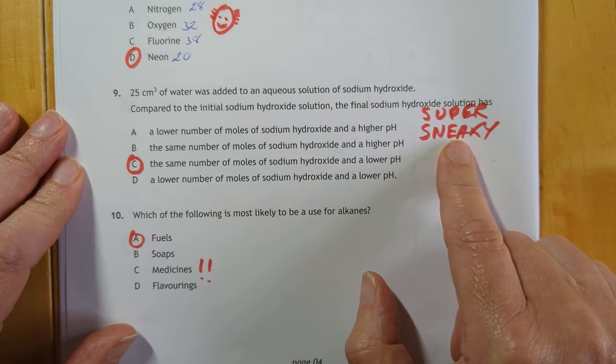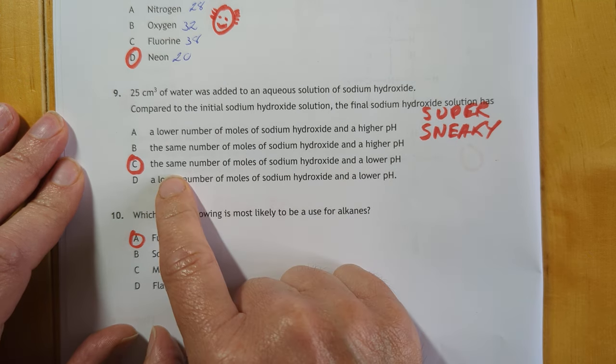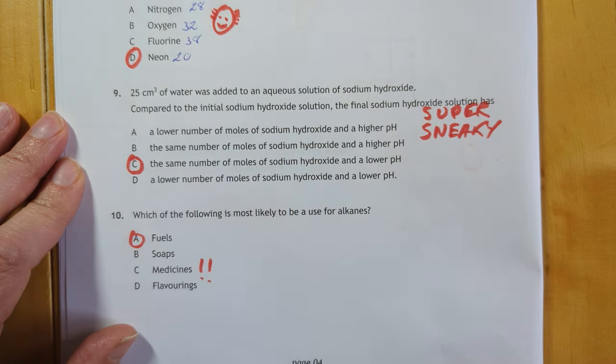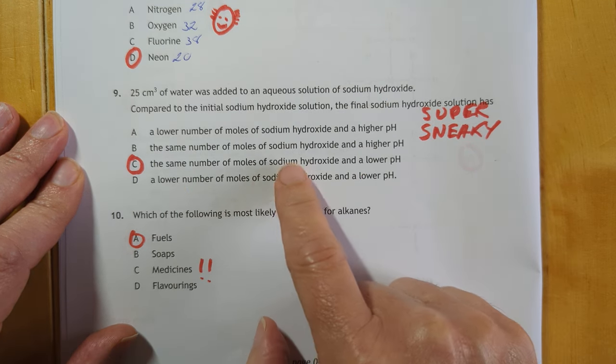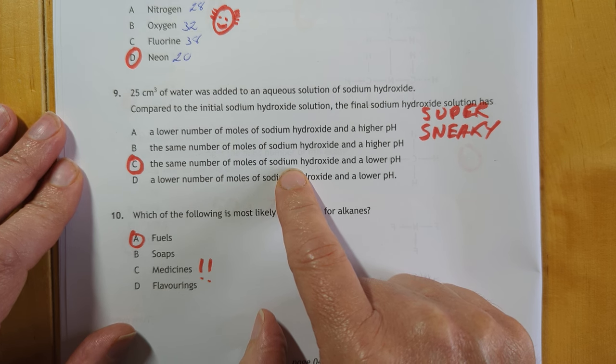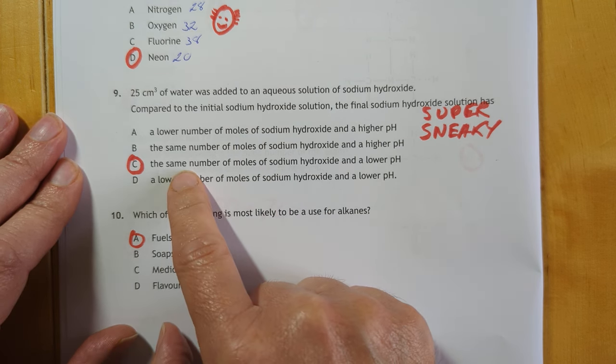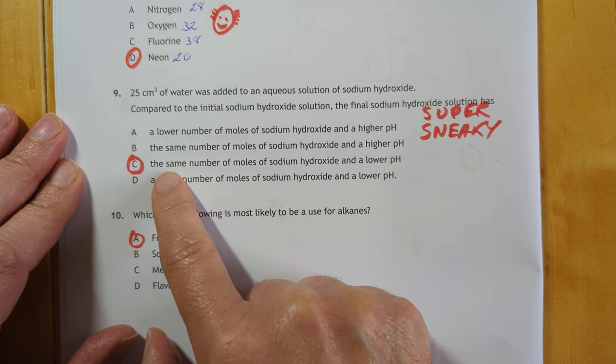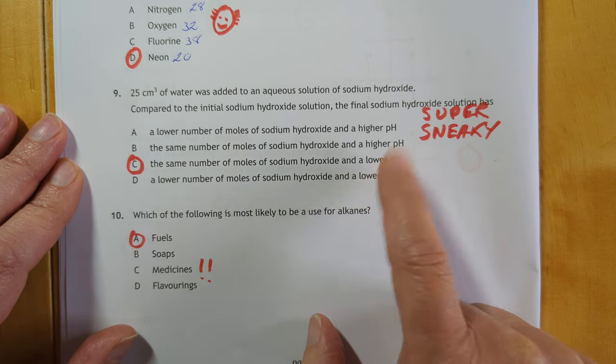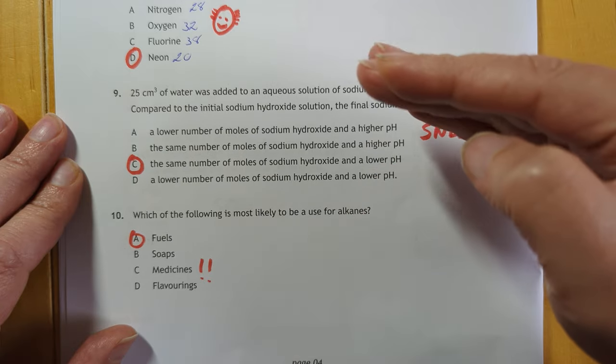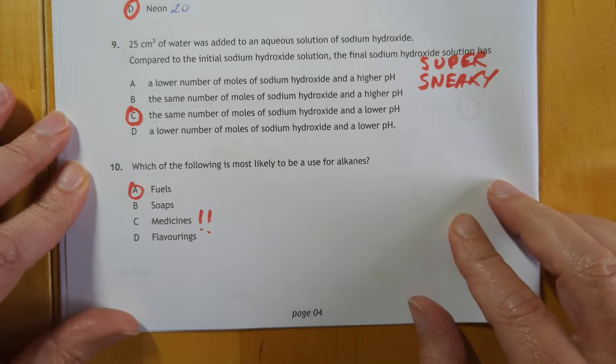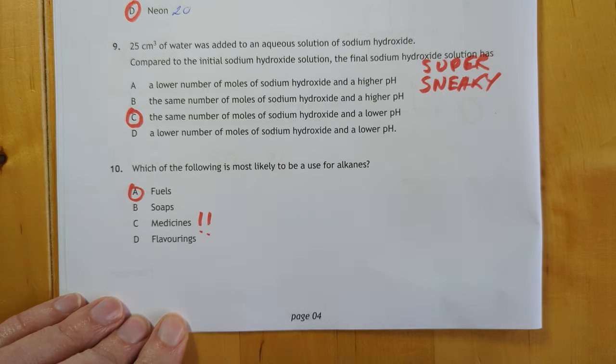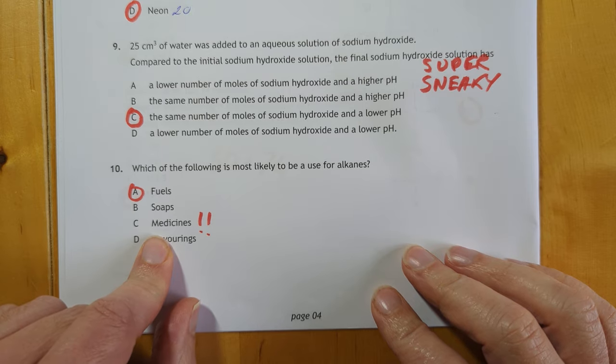Number nine. I've said super sneaky here. Because if you add water to an alkali solution, you've actually still got the same number of moles of the stuff that's dissolved. It's just it's dissolved in a bigger volume. So if they said concentration remains the same, that would be wrong, but the same number of moles is actually still there. And the pH is super sneaky because it will start high at 14, and it will climb down closer to 7. That's why C is that one. I like that question. It's a lot of work for one mark, though. Which of the following is most likely to be a use for alkanes? The answer is fuels. Please don't use petrol as medicine. Don't go drinking your petrol. That is not a good idea.